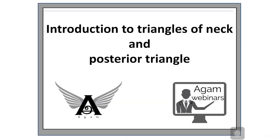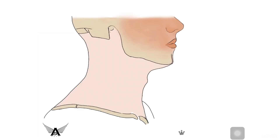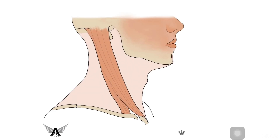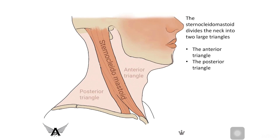Introduction to triangles of the neck and the posterior triangle. The side of the neck is quadrangular in shape and is divided by the sternocleidomastoid into the anterior triangle and the posterior triangle.